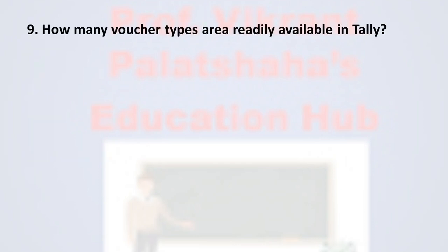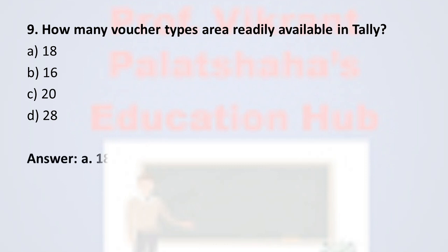Question number eight: How many voucher types are readily available in Tally? Option A: 18, Option B: 16, Option C: 20, Option D: 28. The correct option is Option A, 18. There are 18 types of vouchers readily available in Tally, therefore the correct option is Option A, 18.